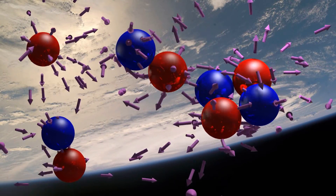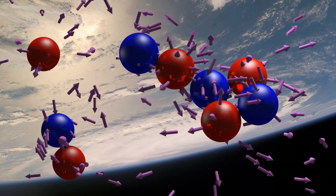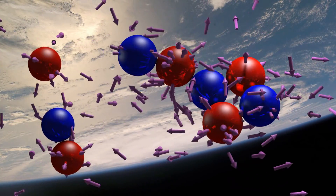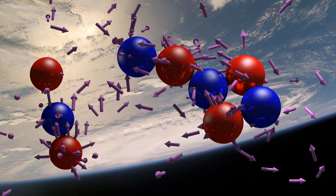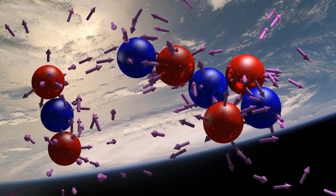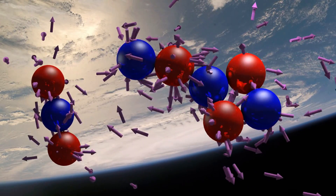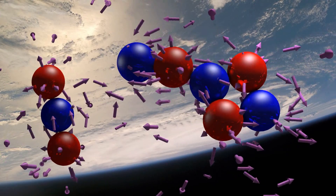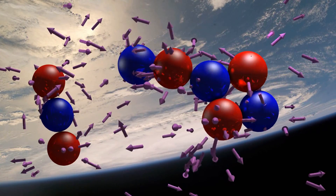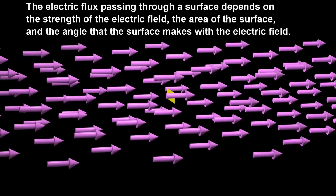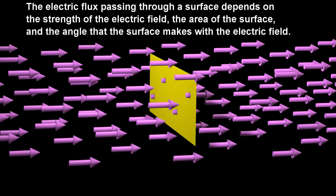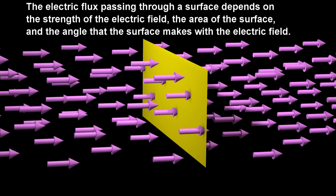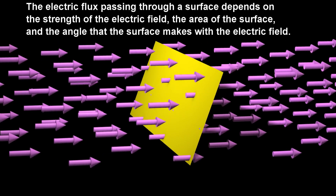The density of electric flux is largest near the charged particles, indicating that this is where the electric field is strongest. The electric flux passing through a surface depends on the strength of the electric field, the area of the surface, and the angle that the surface makes with the electric field.